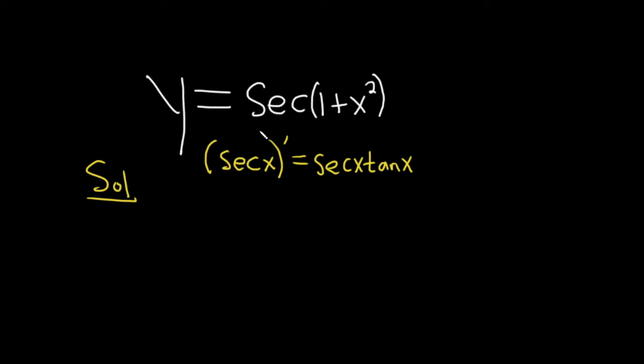For the chain rule you need an inside function and an outside function. Our inside function is 1 plus x squared. Our outside function is the secant of x.